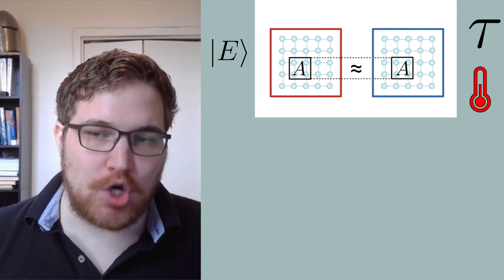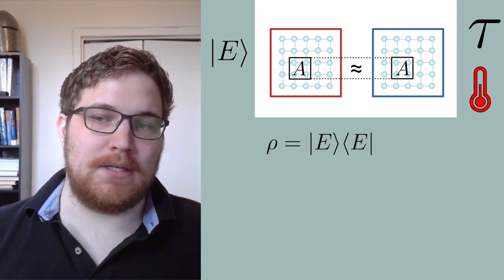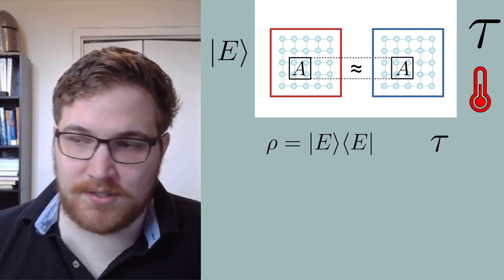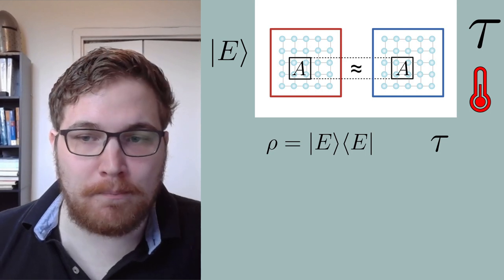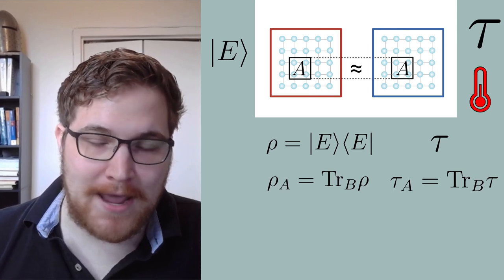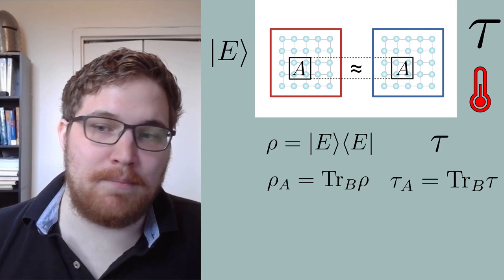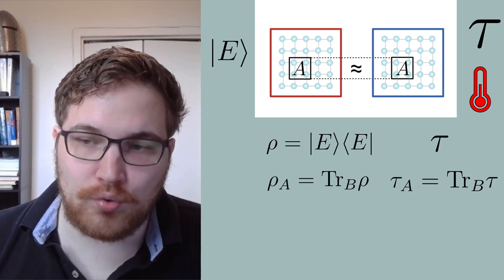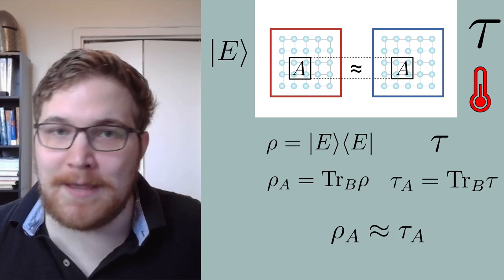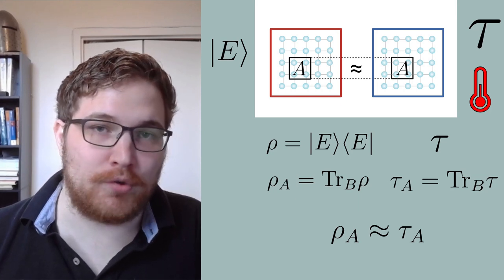So let's put this in the language of our partial trace. Let rho be the pure state describing our eigenstate, and tau be our microcanonical ensemble. Then the reduced states for both on subsystem A are found by tracing out the rest of the system B. The eigenstate thermalization hypothesis is telling us that the two reduced density matrices are essentially identical — that is, they make the same physical predictions for all observables on subsystem A.